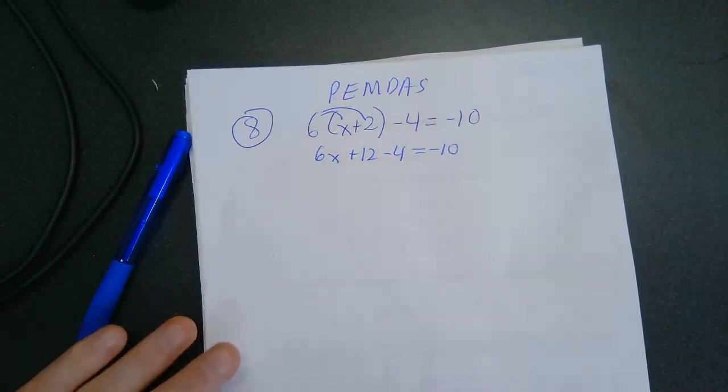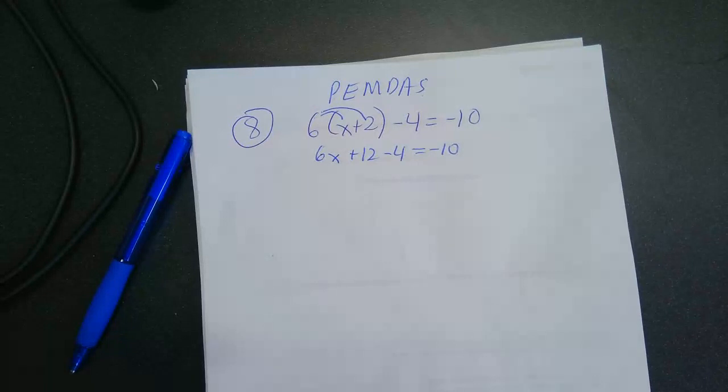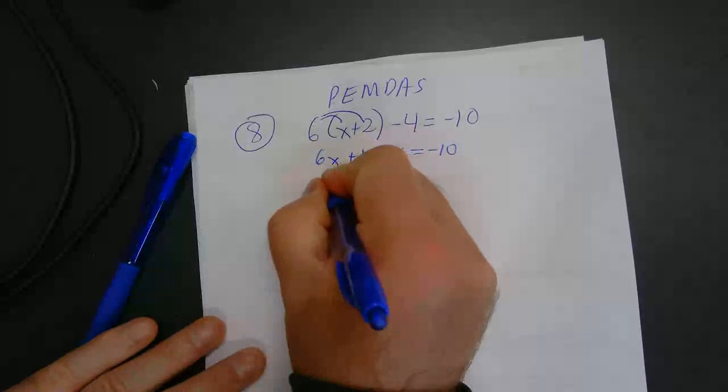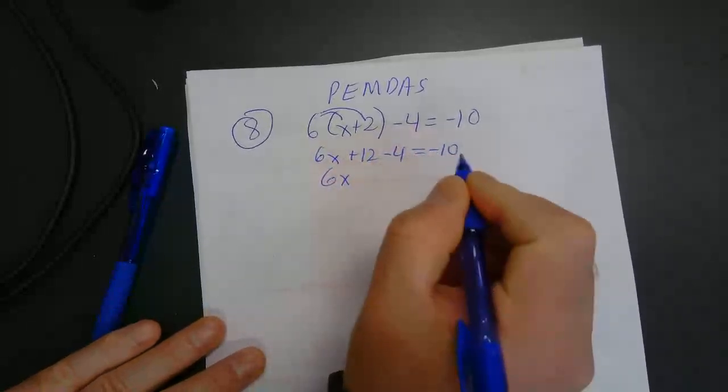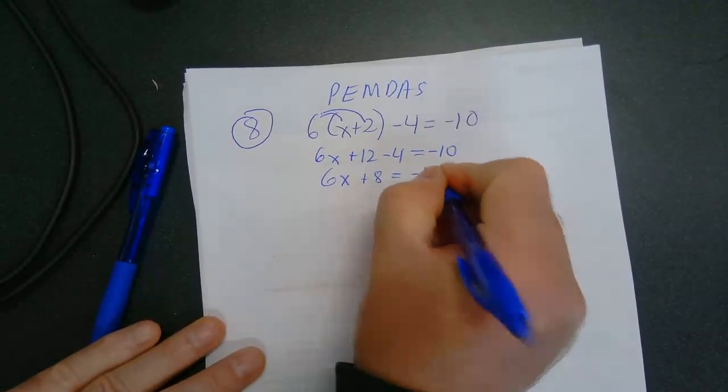Now, if you notice, all my multiplication and dividing is done. Okay, so now what I do is combine like terms in order from left to right. 6X, positive 12 minus 4 is a positive 8, equals negative 10.